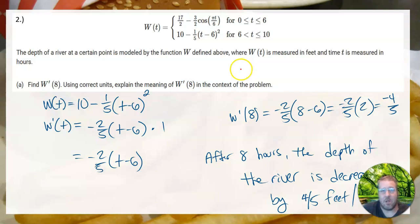Now, first thing we need to do is figure out which piece is W(8). W(8) uses this piece, so everything in the first piece is completely useless. How do I know? Because eight is between six and ten. Had it been six, it would have used this piece or anything less than six, but we only focus here.